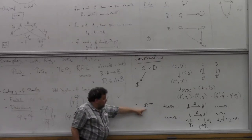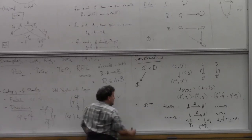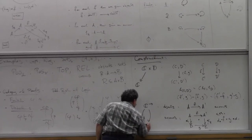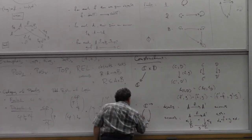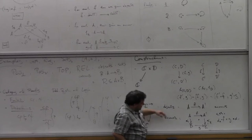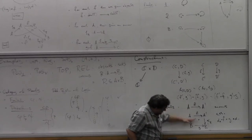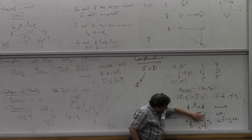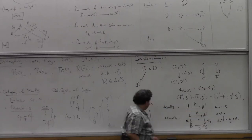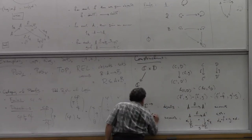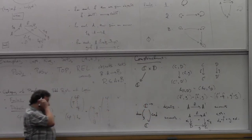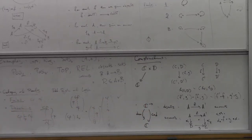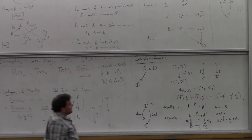For the product category there's a functor — just a projection onto the first component — and you can see it's a functor because it preserves domains, codomains, identities, and composition. For the arrow category, there are two functors: one that takes the domain of an arrow, and another that takes the codomain.